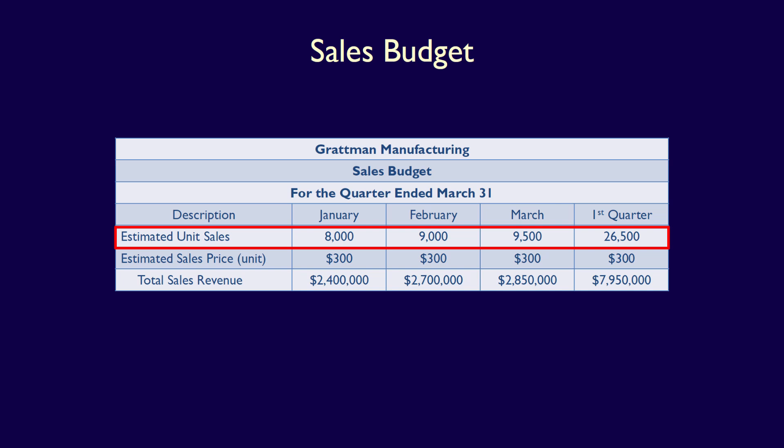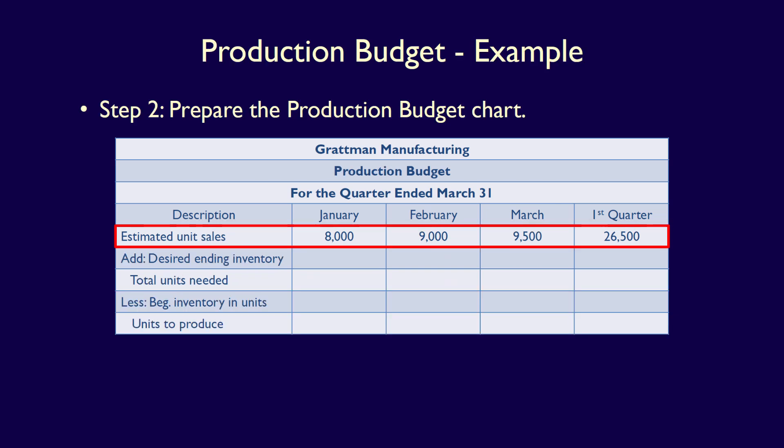We use the estimated unit sales from the first row of the sales budget: January 8,000 units, February 9,000 units, March 9,500 units, and first quarter 26,500 units. We transfer this information into the first row of our production budget: January 8,000, February 9,000, March 9,500, and first quarter 26,500.